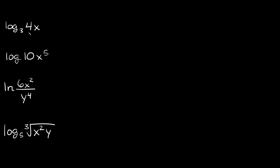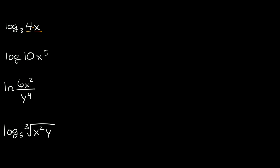Log base 3 of 4x — we want to expand this. As you can see we basically have two terms, 4 and x, so we're multiplying. Whenever you're multiplying two terms you can break them up. This is going to be equal to log base 3 of 4, plus — when you multiply you add — plus log base 3 of x. That would be that one in expanded form.